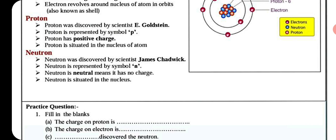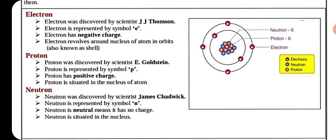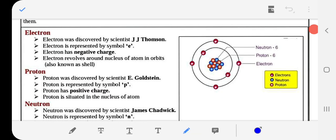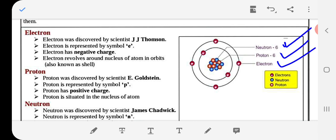Neutron was discovered by scientist James Chadwick — यह प्रश्न आ जाता है कि neutron की खोज किसने की, तो James Chadwick. Neutron is represented by symbol N. Neutron is neutral — means it has no charge. Neutron is situated in the nucleus. आप देख सकते हैं इसमें — यह neutron है, six nucleus में। यह proton है, यह भी nucleus में है। Electron चक्कर लगा रहे हैं।